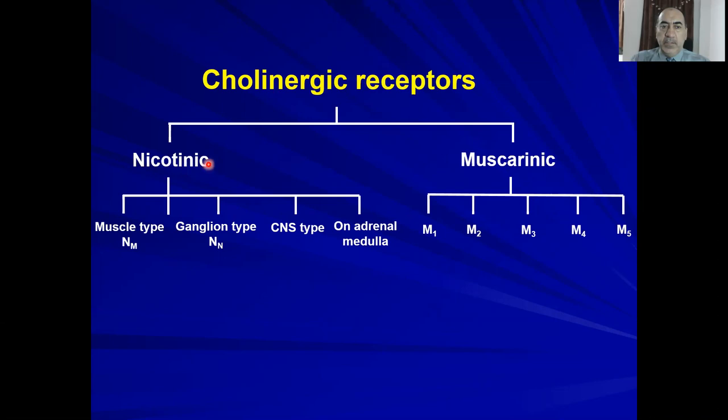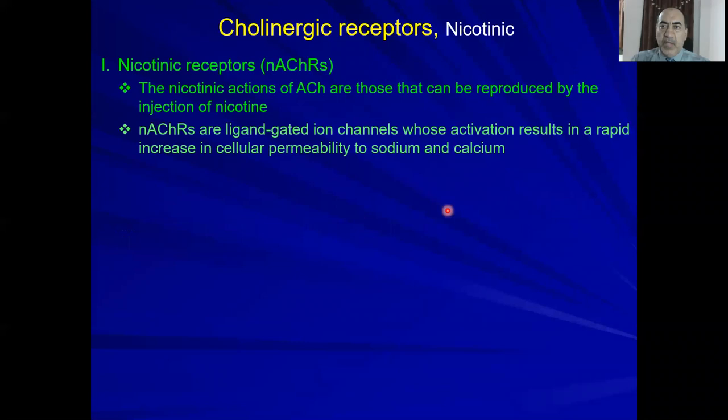Nicotinic receptors are further subdivided into the muscle type NM, ganglion type NN, CNS type, and those expressed on the adrenal medulla. The second subtype of cholinergic receptors is muscarinic receptors, which are further subdivided into M1, M2, M3, M4, and M5.